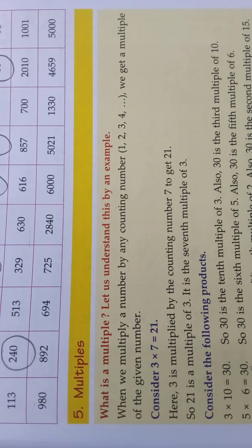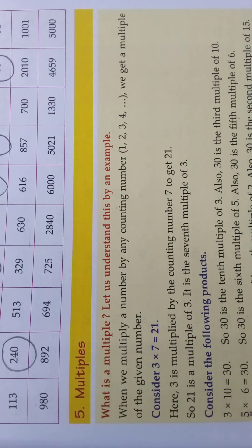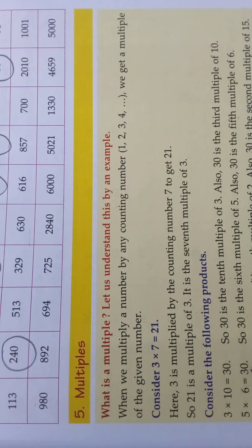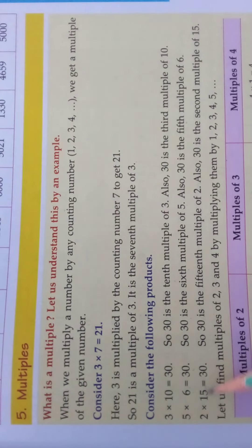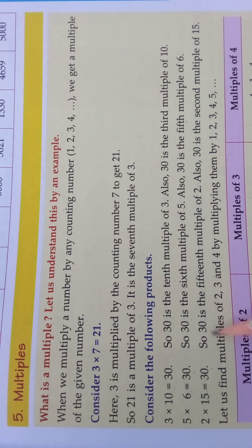5 sixes are 30, so 30 is the 6th multiple of 5, and 30 is the 5th multiple of 6 — it will come in the 5 table as well as the 6 table. 5 sixes are 30, 6 fives are 30, so 30 is a multiple of both 5 and 6. Also, 2 fifteens are 30 — it comes in the 15 table as well as the 2 table. So 30 is the 15th multiple of 2 and the 2nd multiple of 15.